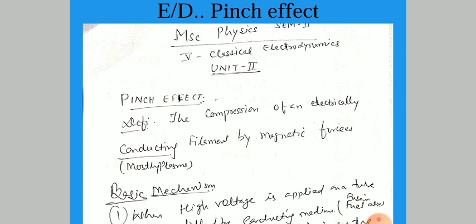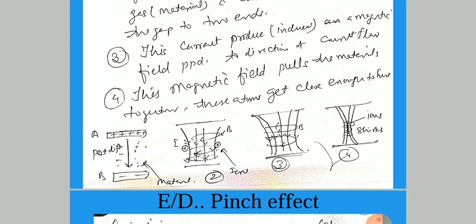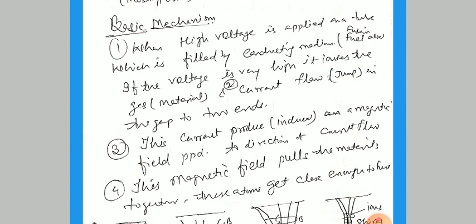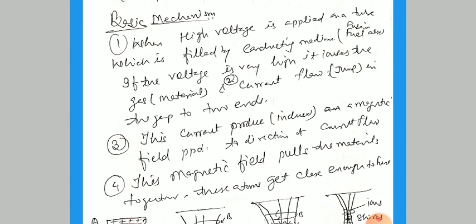So what is the basic mechanism of the Pinch Effect? In the first figure, we can see the conducting medium like the plasma is filled in between two high potential plates, positive and negative. When the high voltage is applied on the conducting medium — mostly fluids or fusion fuel — the voltage is very high so it ionizes the gas or the materials. Due to this, the plasma or any conducting medium is converted into positive ions and electrons. The electrons are free, so the current will flow from high potential to low potential — in this figure that is from top to bottom.